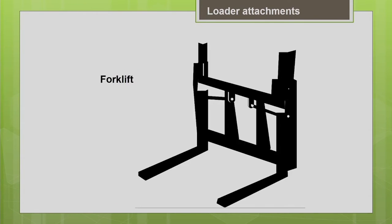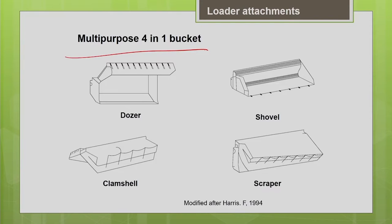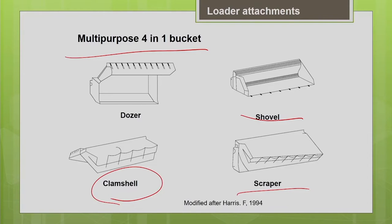With the forklift attachment, you can remove the bucket and attach the forks to the tractor to carry precast elements. The multipurpose 4-in-1 bucket can function as a dozing blade, a normal loader, a scraper, or a clamshell — where the clamshell is used for vertical or deeper digging. The same bucket can be used for any of these four functions, which is why it is called a multipurpose bucket.